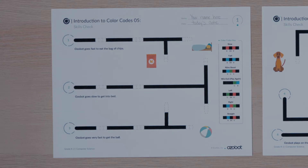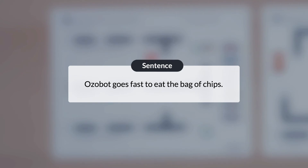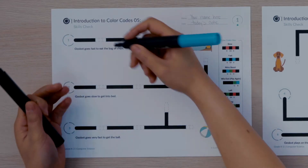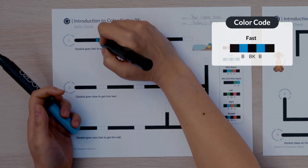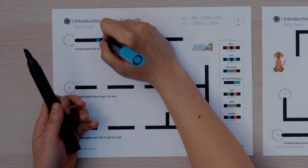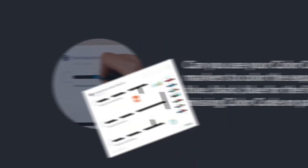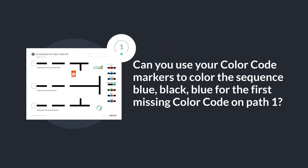The first missing color code will program the speed of Ozovot. Think about the sentence — how will Ozovot move? That's right, Ozovot will move fast. Look at the color codes key. Do you see a color code to program Ozovot to move fast? Well done. The fast color code will program Ozovot to move fast. I will draw the color sequence blue, black, blue for the first missing color code on path 1. Can you use your color code markers to color the sequence blue, black, blue for the first missing color code on path 1?